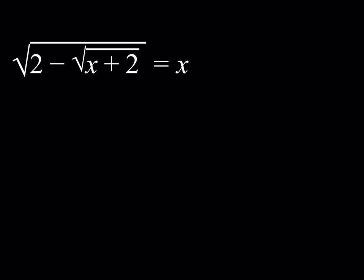We're going to be solving this radical equation. Obviously, if you have a radical equation you can try to eliminate the radical by squaring both sides. So let's go ahead and try that first and see what happens. If I square both sides here in this expression, then I should be getting something like 2 minus the square root of x plus 2 equals x squared.